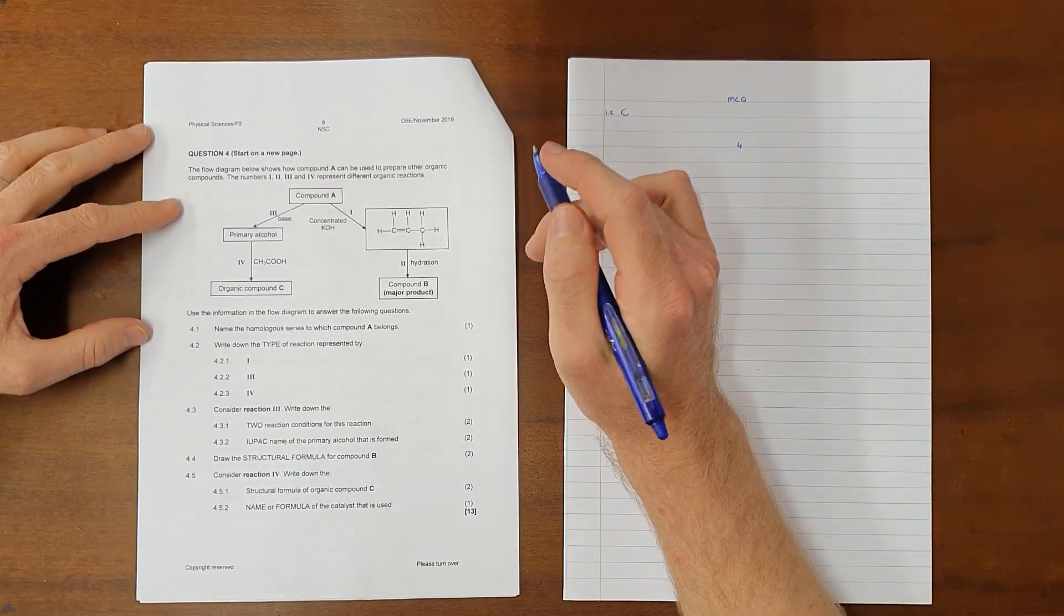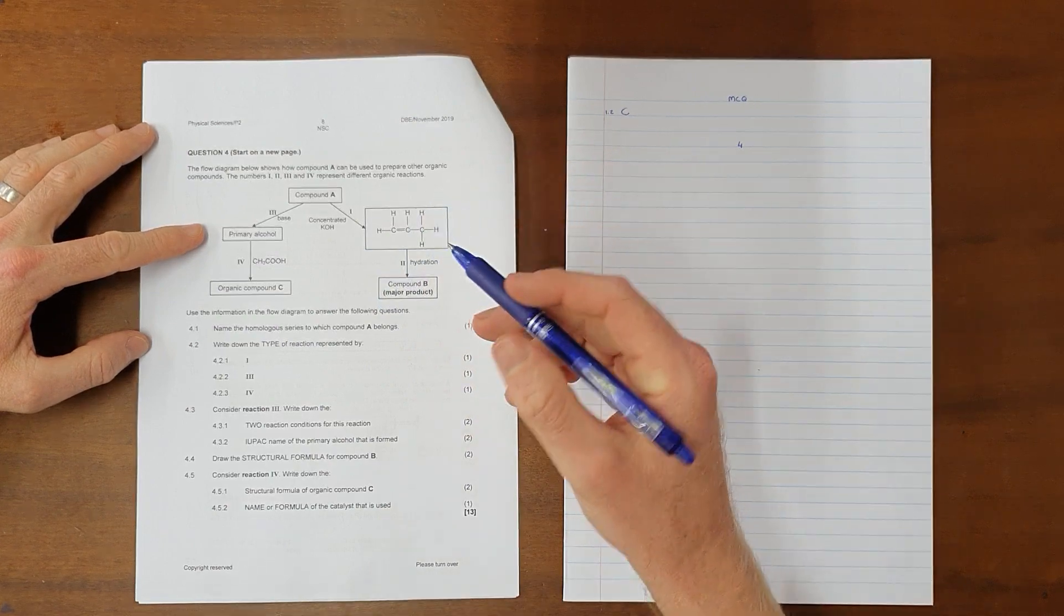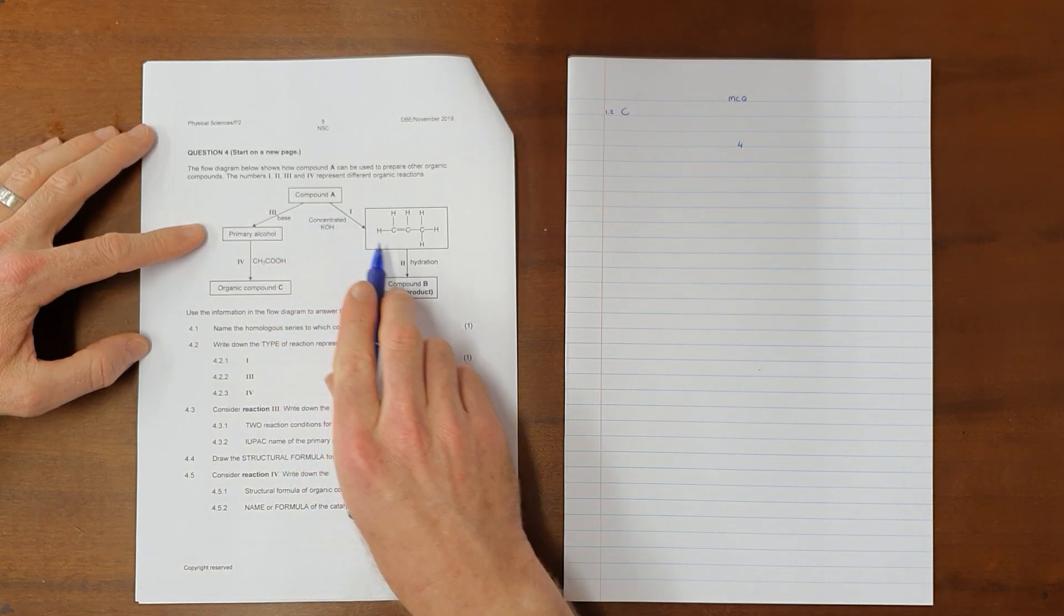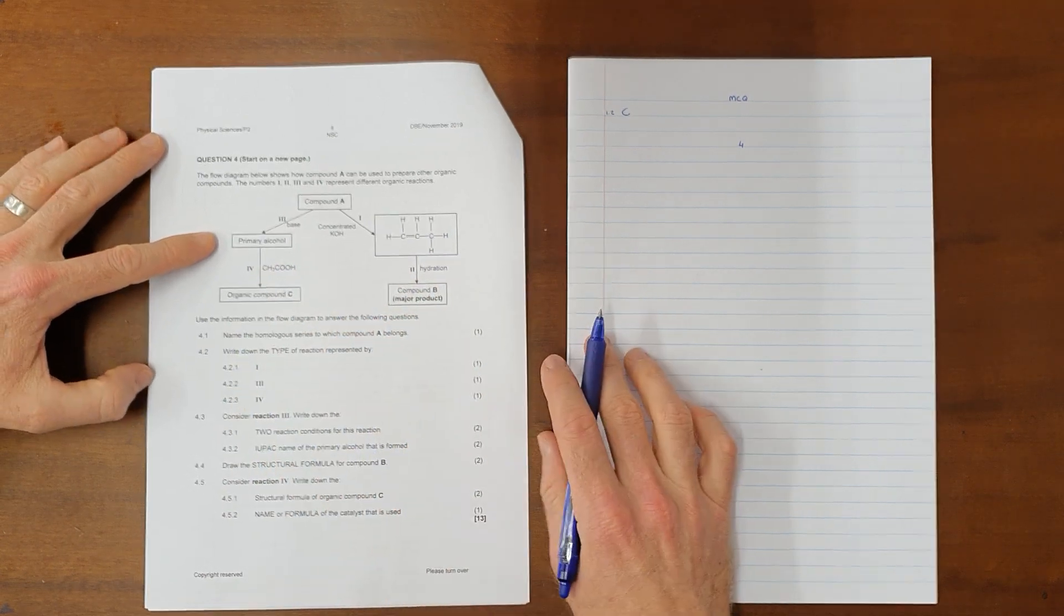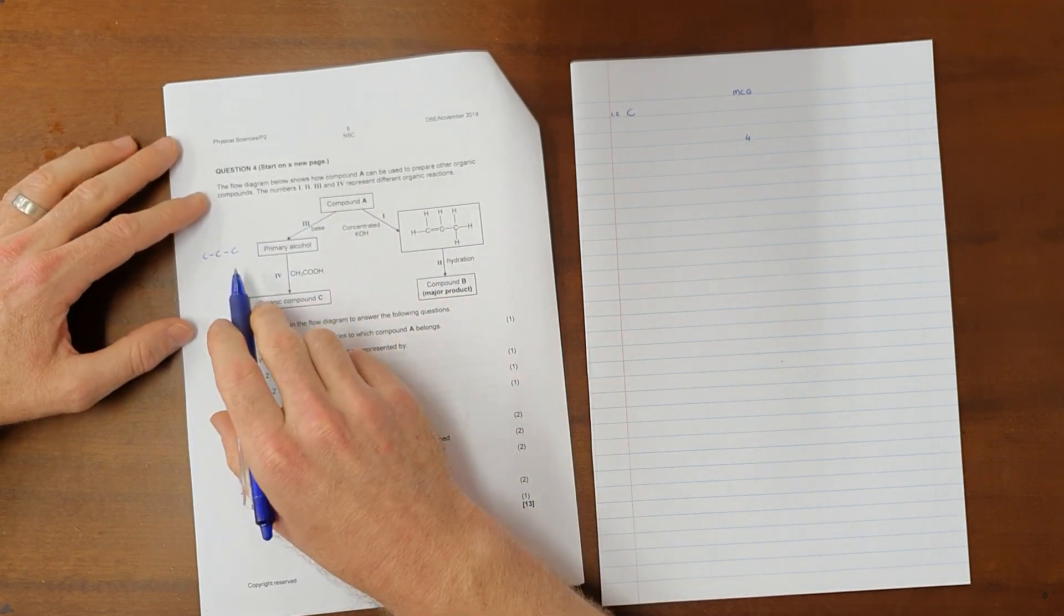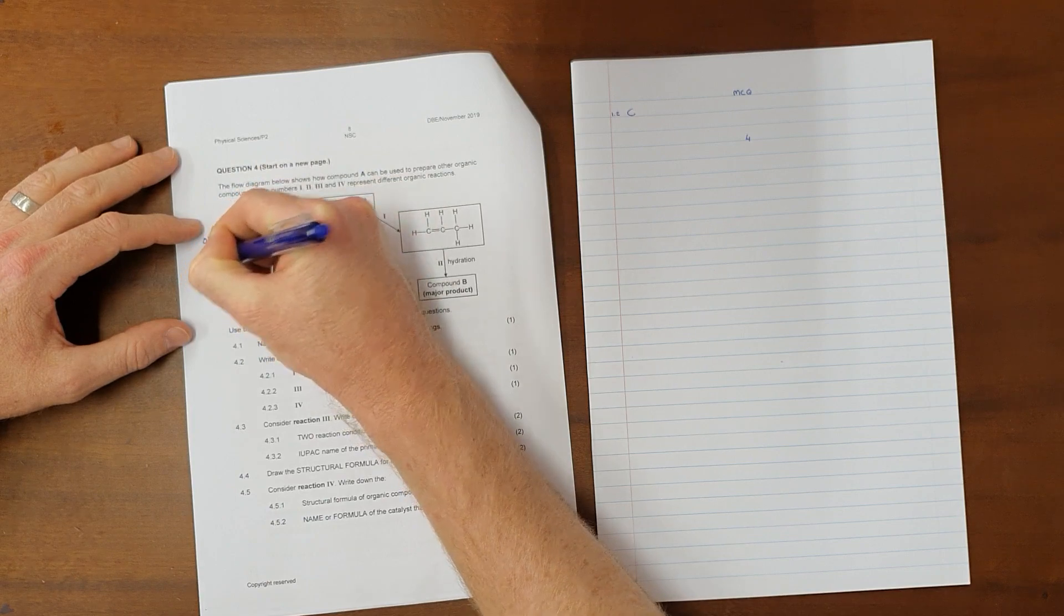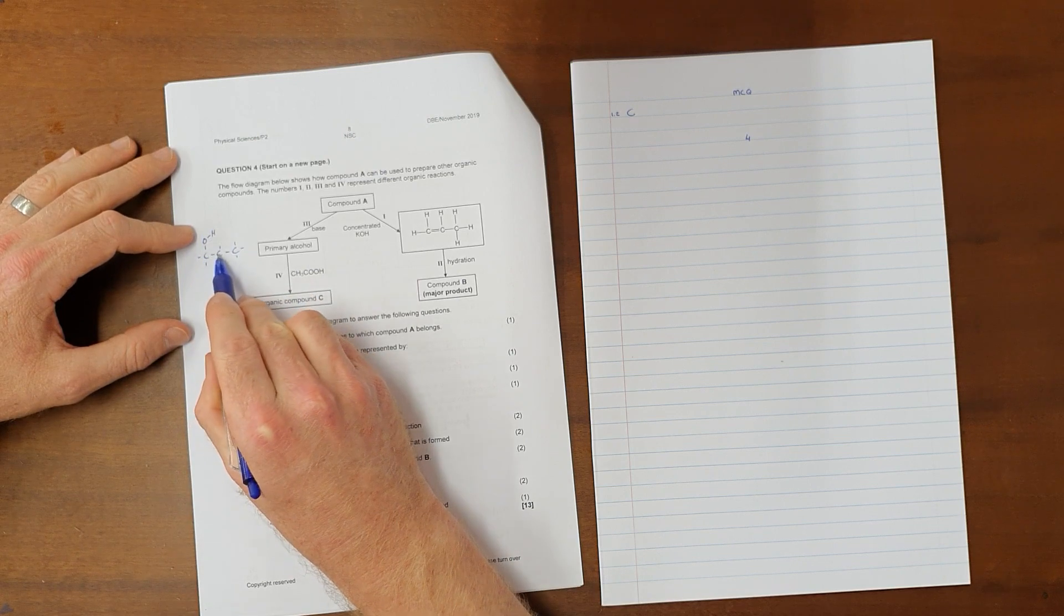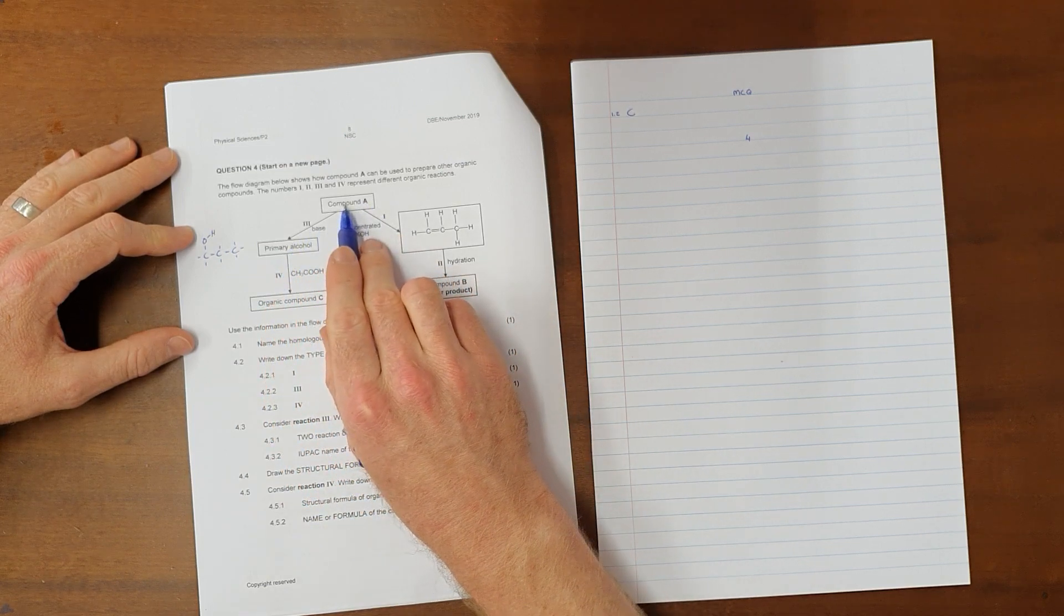What I would advise that you start by doing is looking at the flow diagram and getting an idea of what kind of compounds we are forming and working with. The first thing that we can see is that compound A and compound C are similar in that they must all have three carbons. The same goes for our primary alcohol here where we can show a three carbon chain. When we have been told it is a primary alcohol, primary alcohol means that the hydroxyl group should be attached to the first carbon. Because a primary alcohol is one in which the carbon attached to the hydroxyl group is only attached to one other carbon.